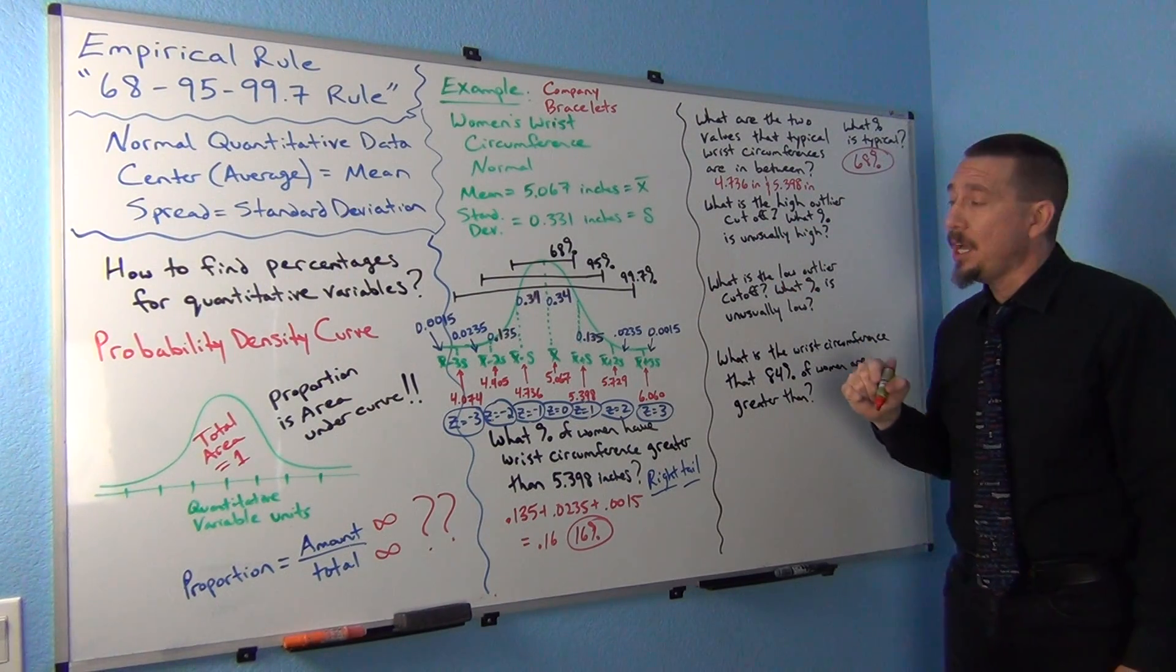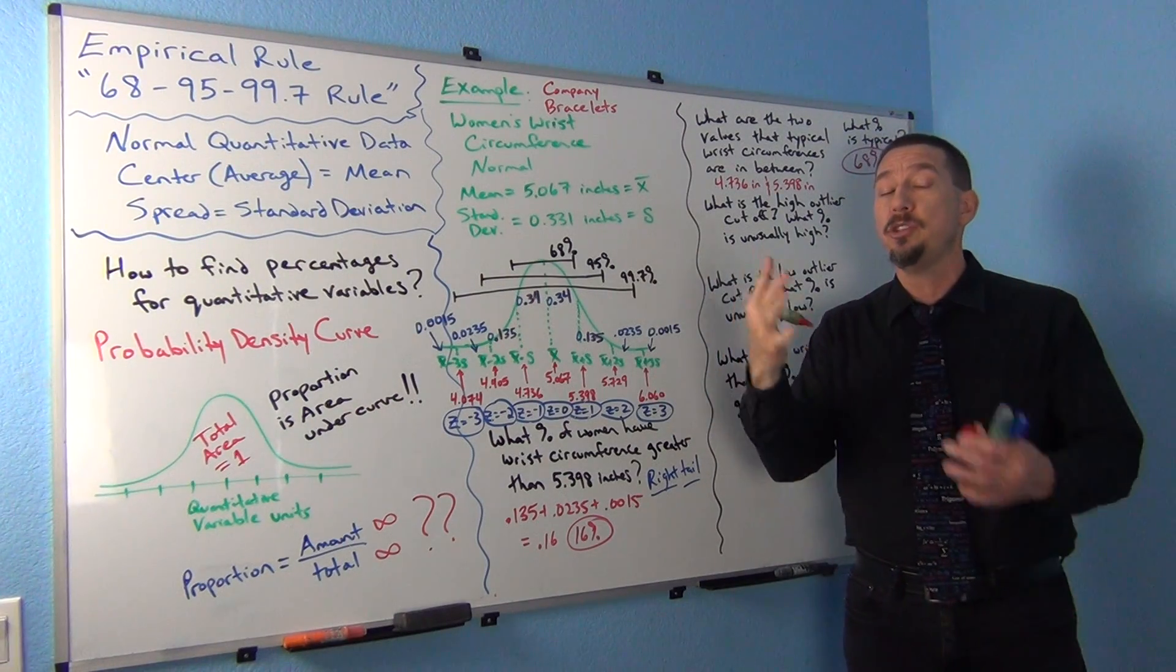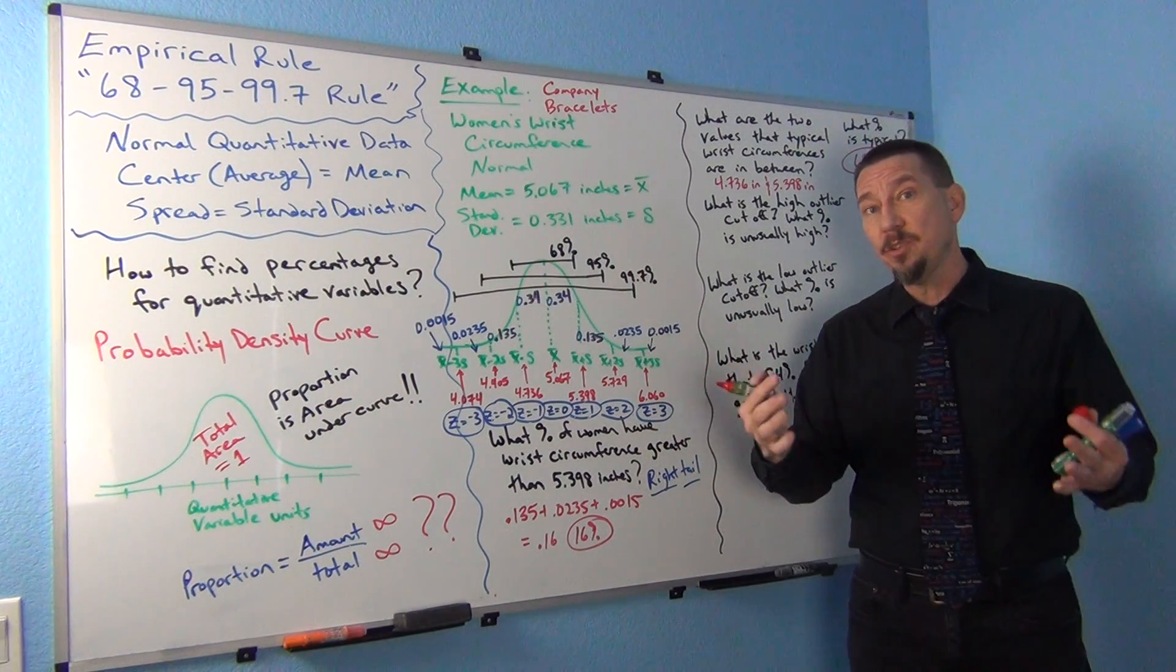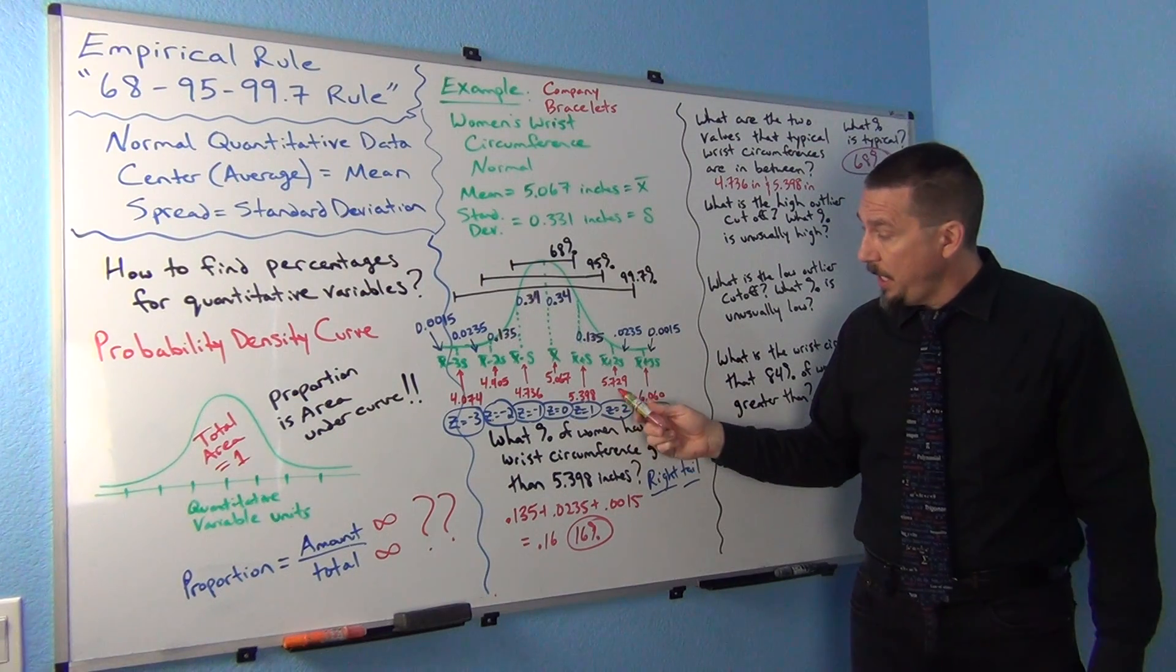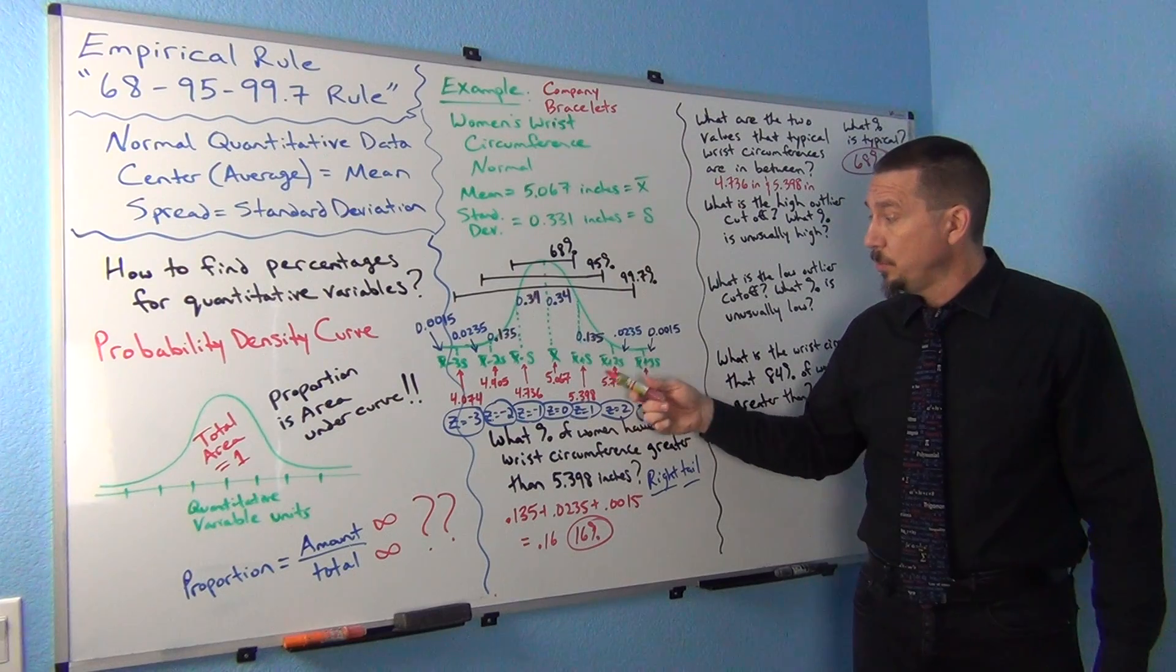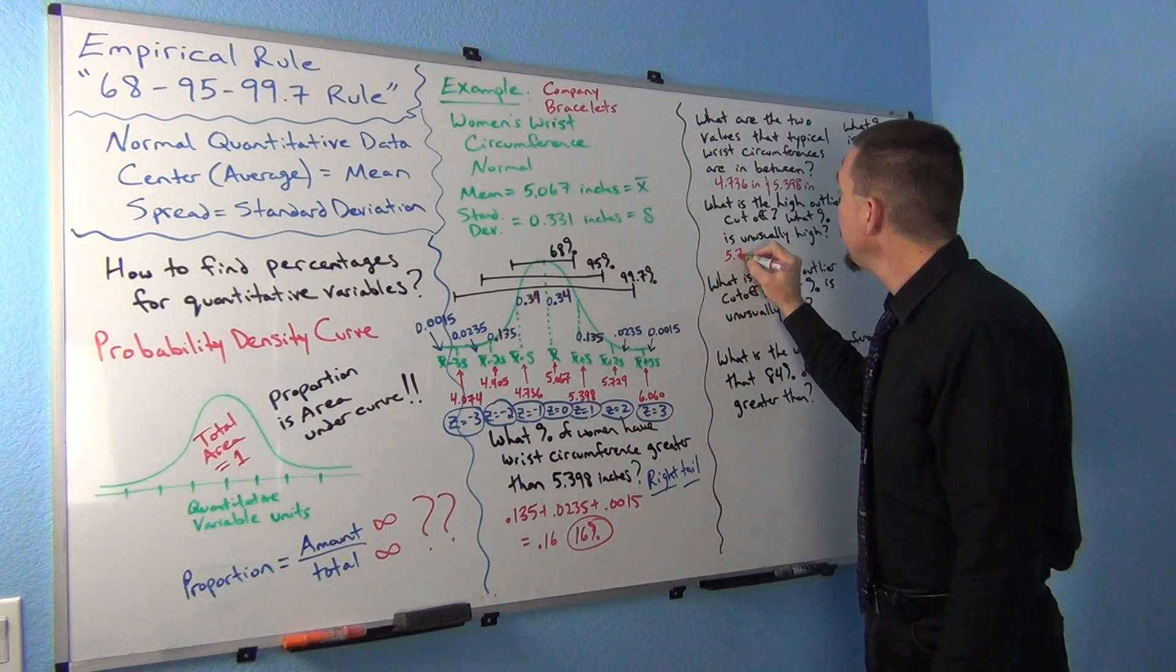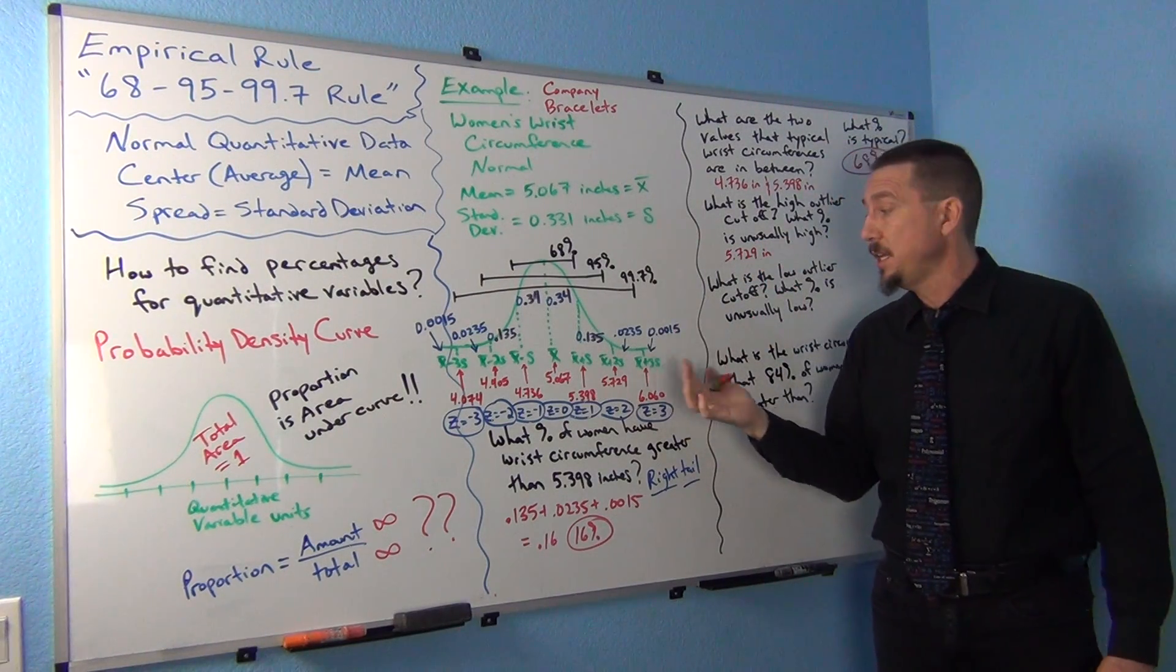What is the high outlier cutoff? We learned when studying normal data, the high outlier cutoff was two standard deviations above the mean. So that would be a z-score of 2. If you look at the z-score of 2, the wrist circumference that goes with that is 5.729 inches. So 5.729 inches would be the unusual high cutoff if I was analyzing this data.